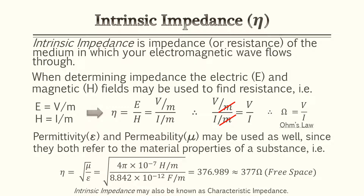When performing your calculations for wave propagation, it's very common to come across intrinsic impedance. Intrinsic impedance is the impedance or resistance of the medium in which your electromagnetic waves flow through. When determining this, it's common to use your electric and magnetic waves to find this resistance. Anytime you do electric fields over magnetic fields, it's going to be volts per meter divided by amps per meter — the meters cancel, giving you volts over amps, which equals ohms.